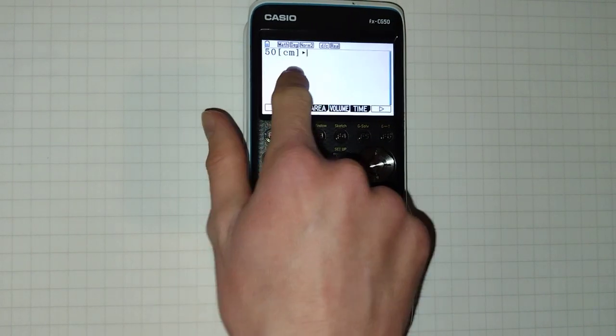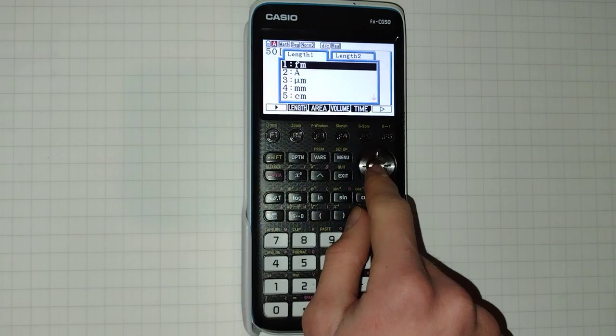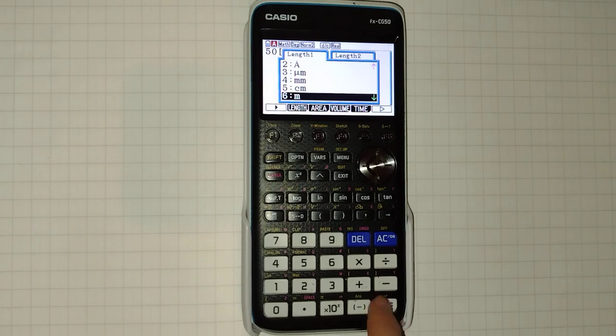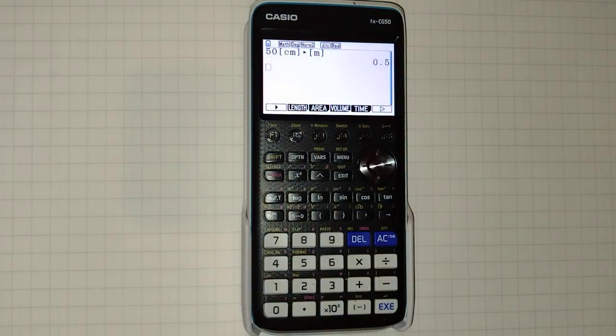We can then use this arrow and this means convert to and once again we can click F2 to get the length menu and scroll down and select meters. We then click execute and 0.5 meters is the result.